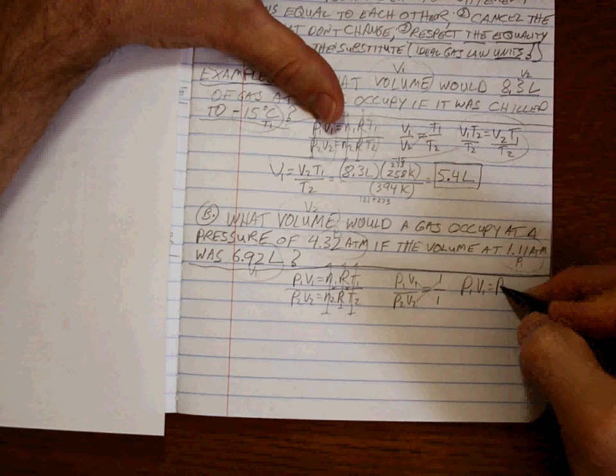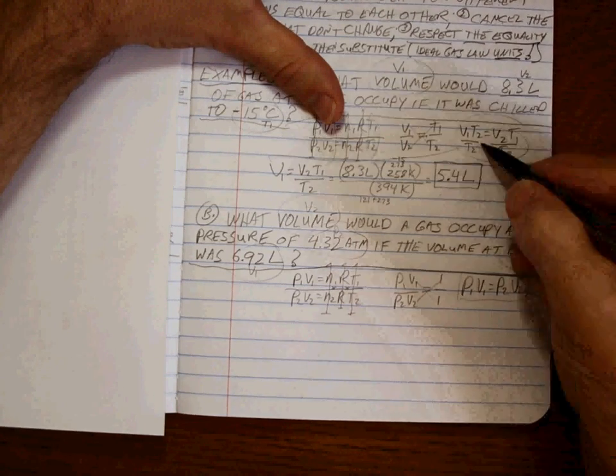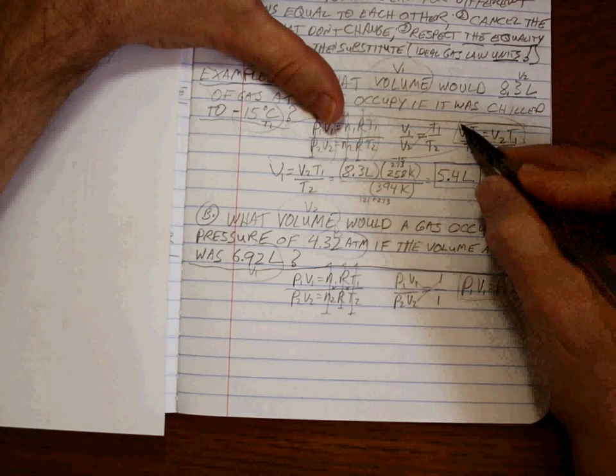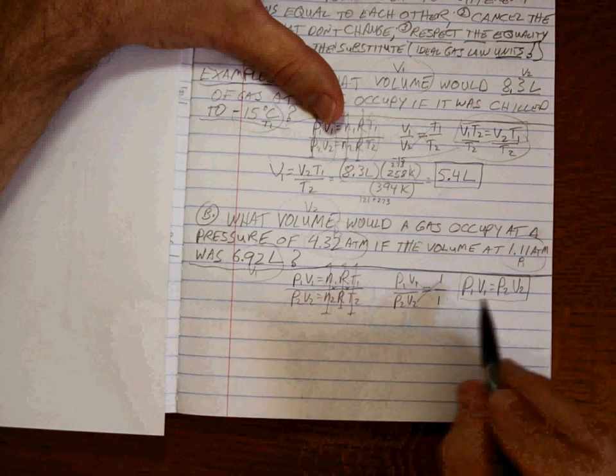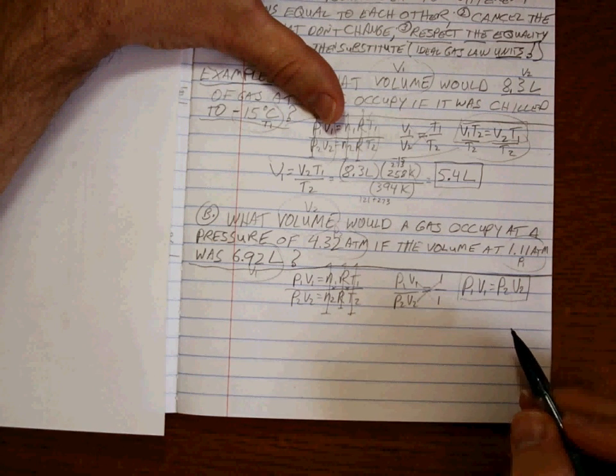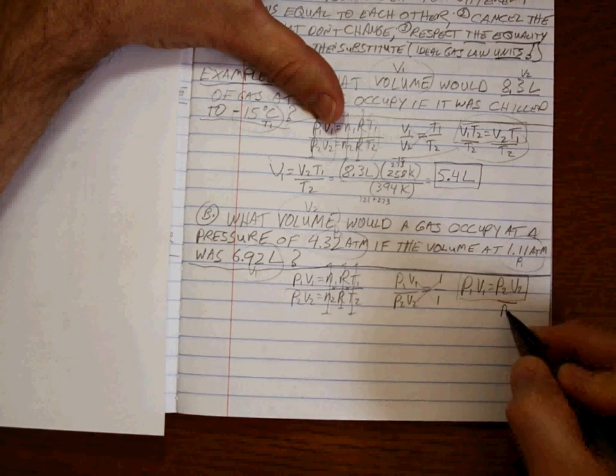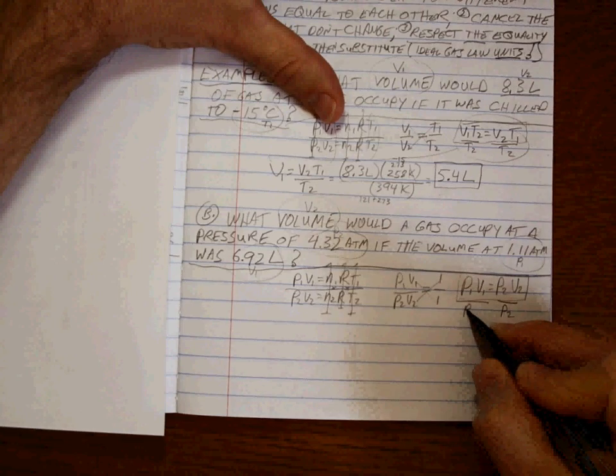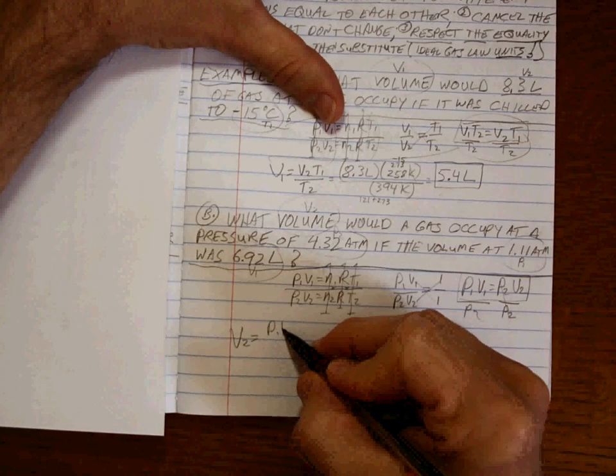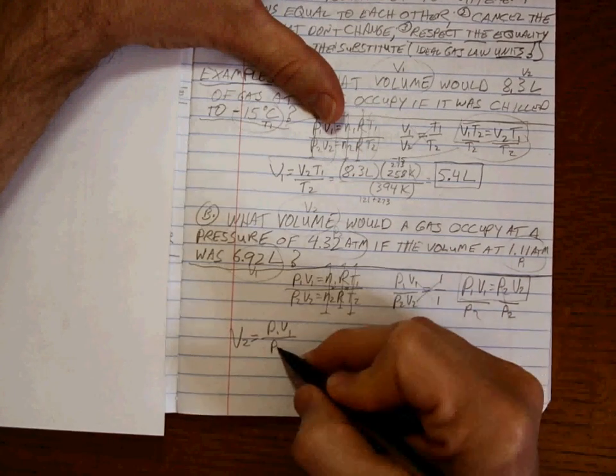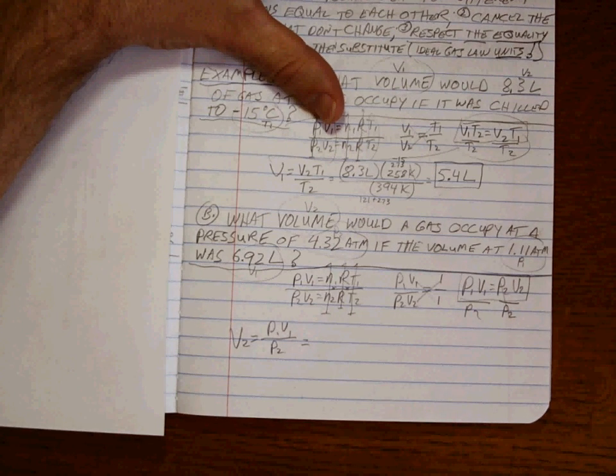So whenever we cross-multiply, we get P1V1 equal to P2V2. Up here, it was V1T2V2T1. So you can't just assign the numbers. You have to do the algebra, but it doesn't take very long, because once you're here, it's real easy to solve for what you want, V2. So we're going to divide both sides by P2. So V2 is equal to P1V1 over P2. Good.